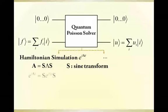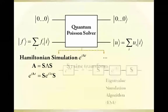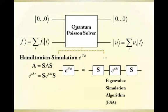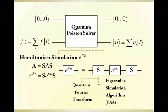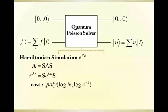The exponential of the diagonal matrix is efficiently implemented using an eigenvalue simulation algorithm, and the sine transform is implemented using a quantum circuit based on quantum Fourier transform. The overall cost of the Hamiltonian simulation is polynomial in the logarithm of the matrix size and inverse error.